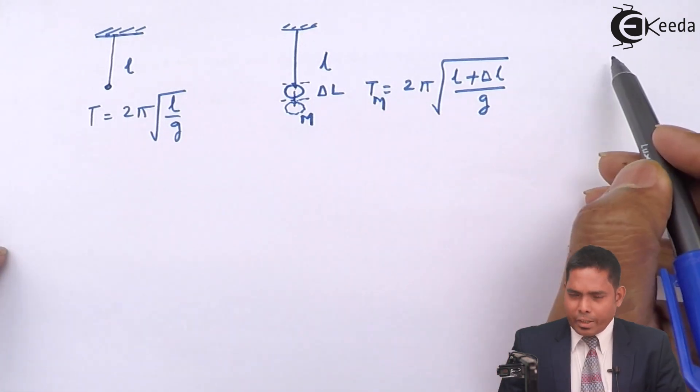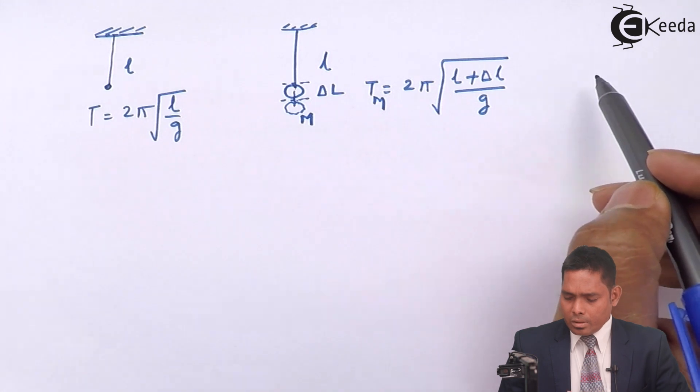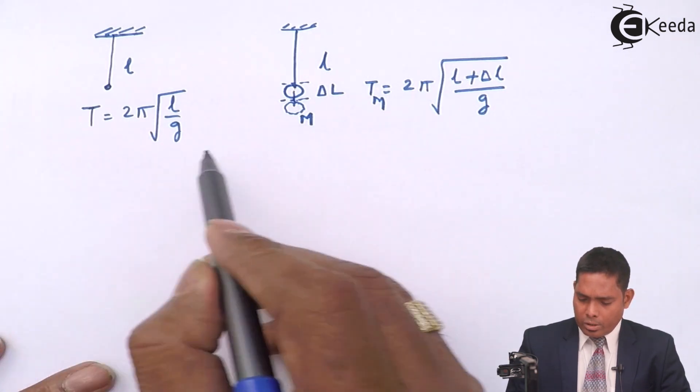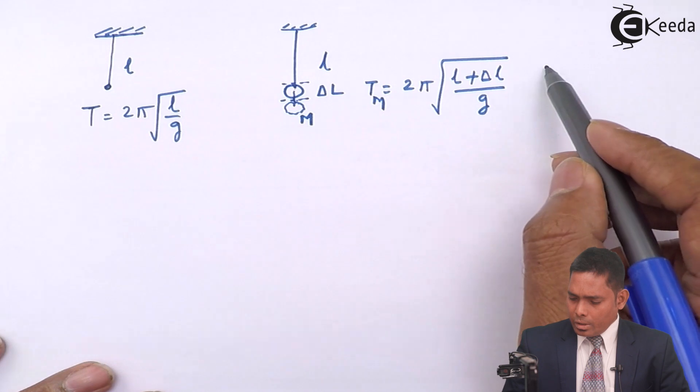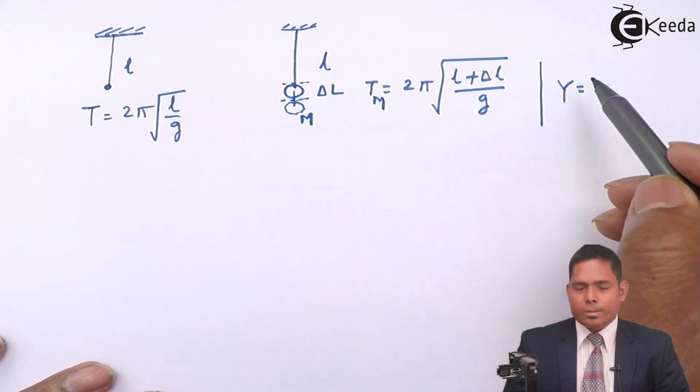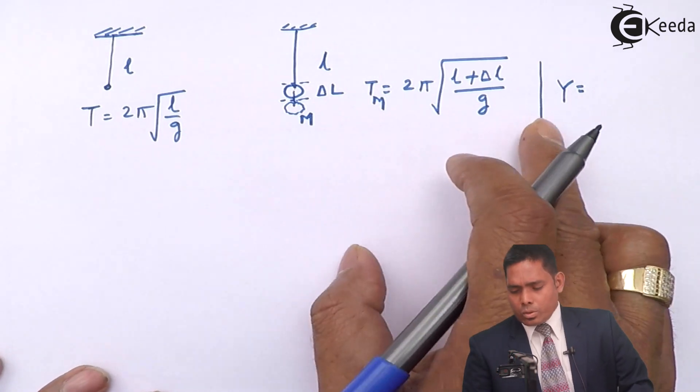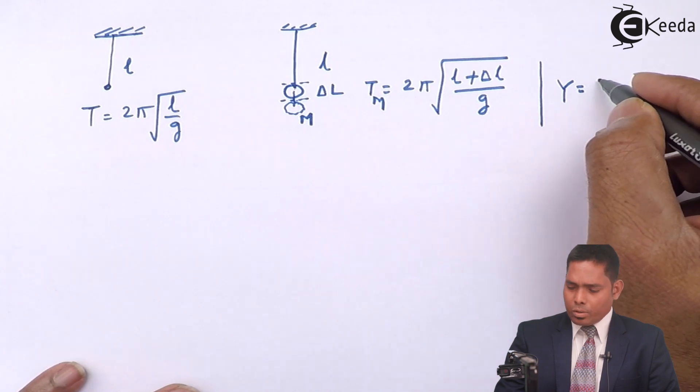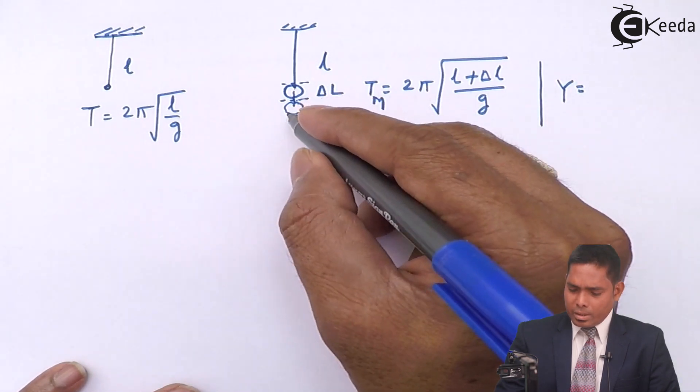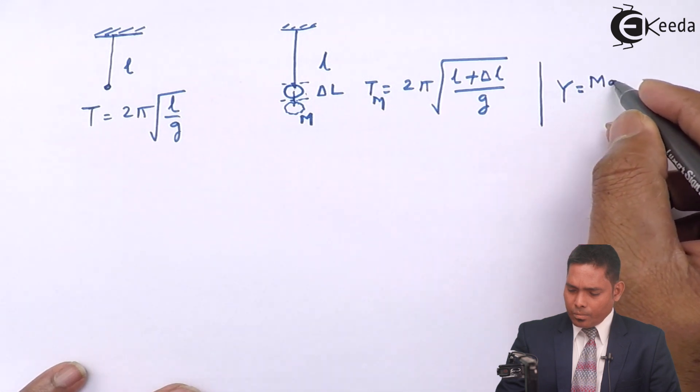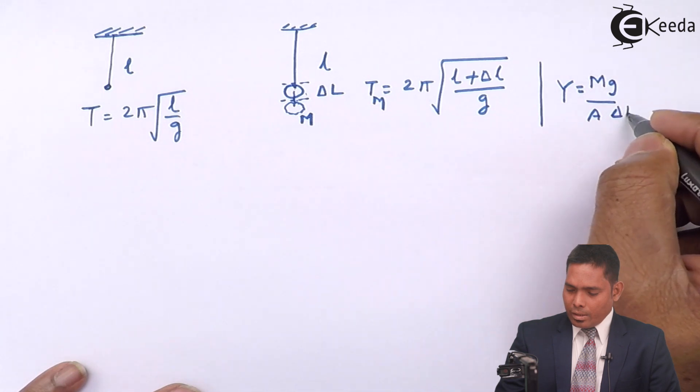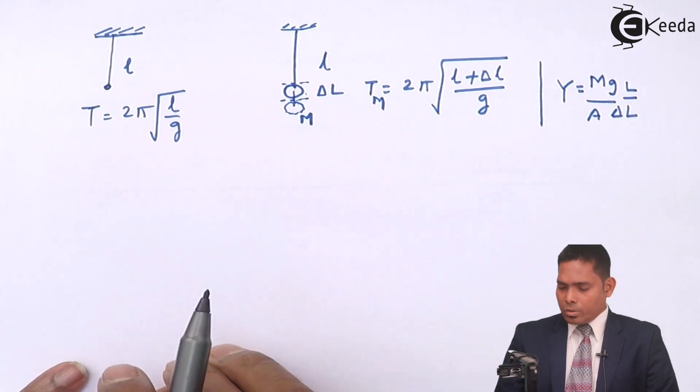Now our aim is to find the reciprocal of Young's modulus. So we have to again write one more thing here, that Y formula. So to introduce Y, you have to know what is Y. Y is stress upon strain, that is force upon area. The force that is responsible for this extension is Mg. Force upon area is A. Then the strain is delta L over L. So this is the formula for Y.